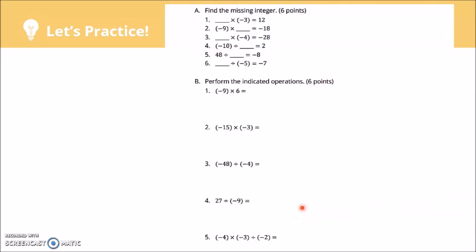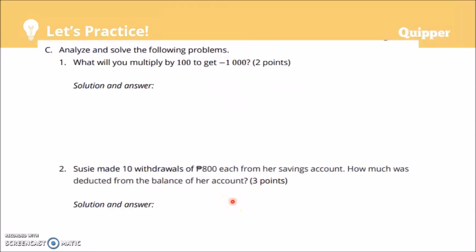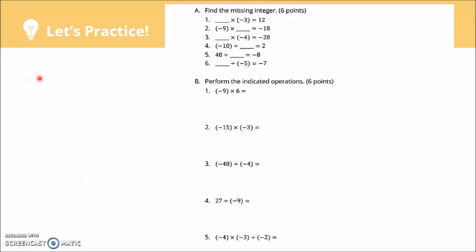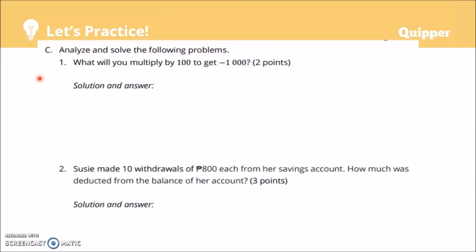Let's check your understanding. I want you to copy and answer the following in your notebook: Section A, numbers 1 to 6; Section B, numbers 1 to 5; and Section C, numbers 1 and 2. Copy and answer in your notebook, and we will check that via Zoom meeting. Thank you.